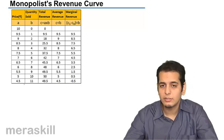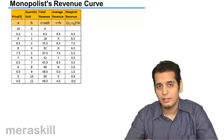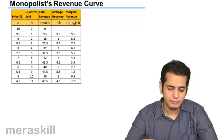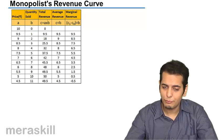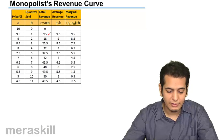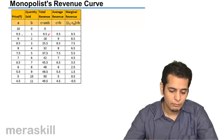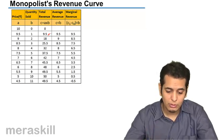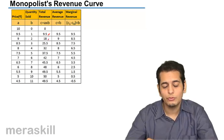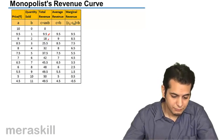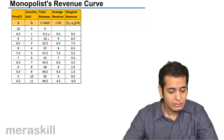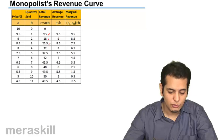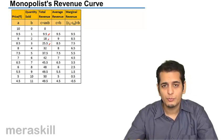This continues until 0.5 where he is able to sell 11 units. Now let's see what is the total revenue that he is making. When he is selling 1 unit at 9.5 rupees, he is making a total revenue of 9.5. When the price is 9, he is able to sell 2 units, so the total revenue is 18 rupees. If he decreases his price to 8.5, he is able to sell 3 units, so the total revenue is 25.5 rupees.